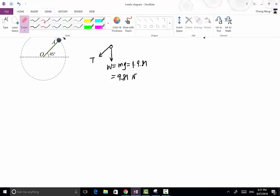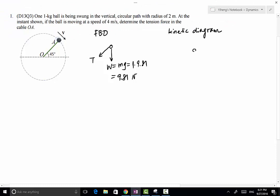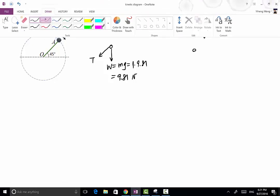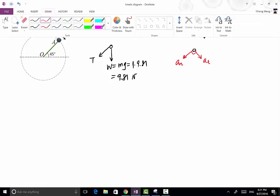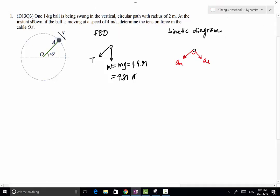Therefore to draw our kinetic diagram, again we have the object. It is subjected to An, which is the normal acceleration, as well as At, which is the tangential acceleration. And this is a 90 degree angle. These two directions are perpendicular to each other. So of course if you want to write its kinetic force, that is M times An and M times At.